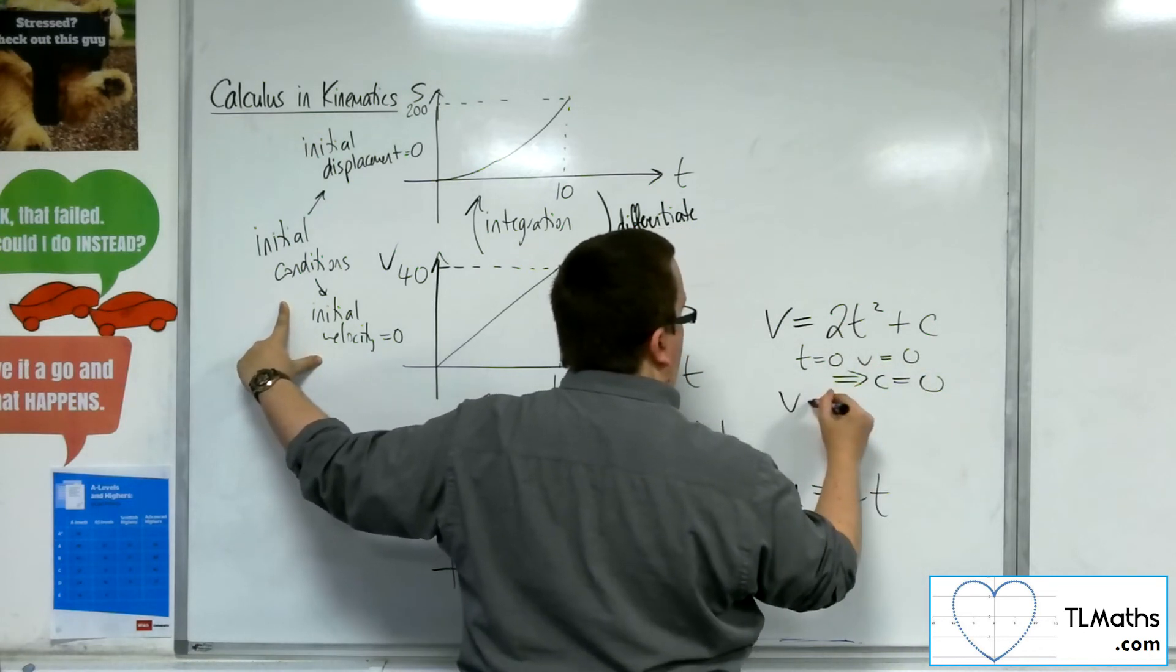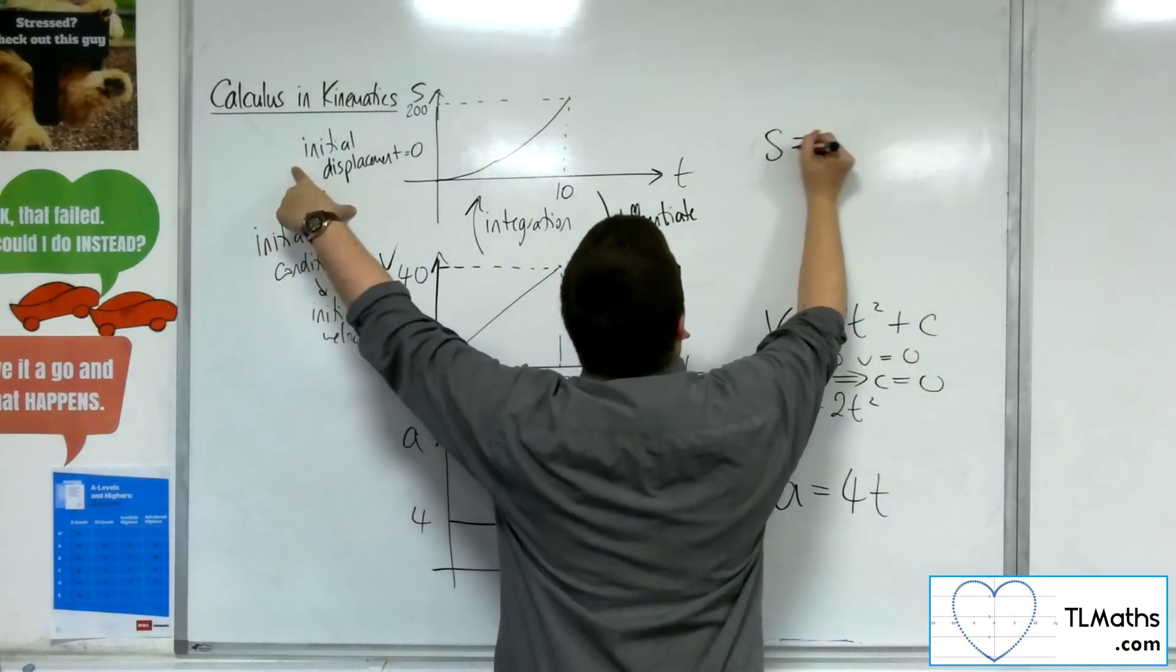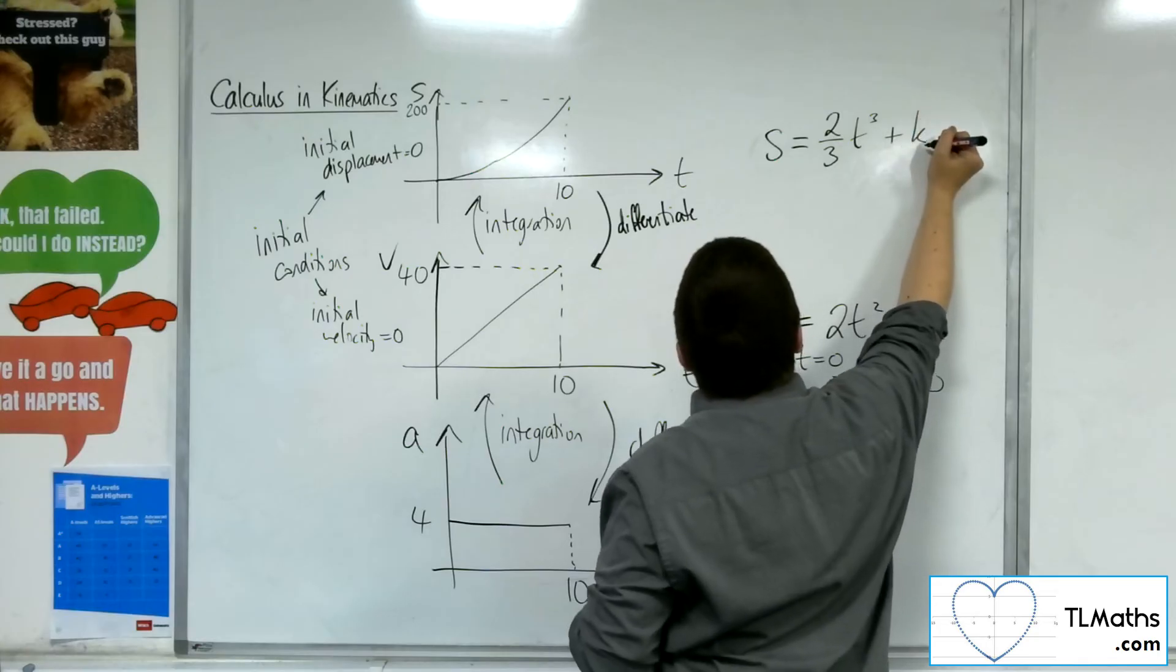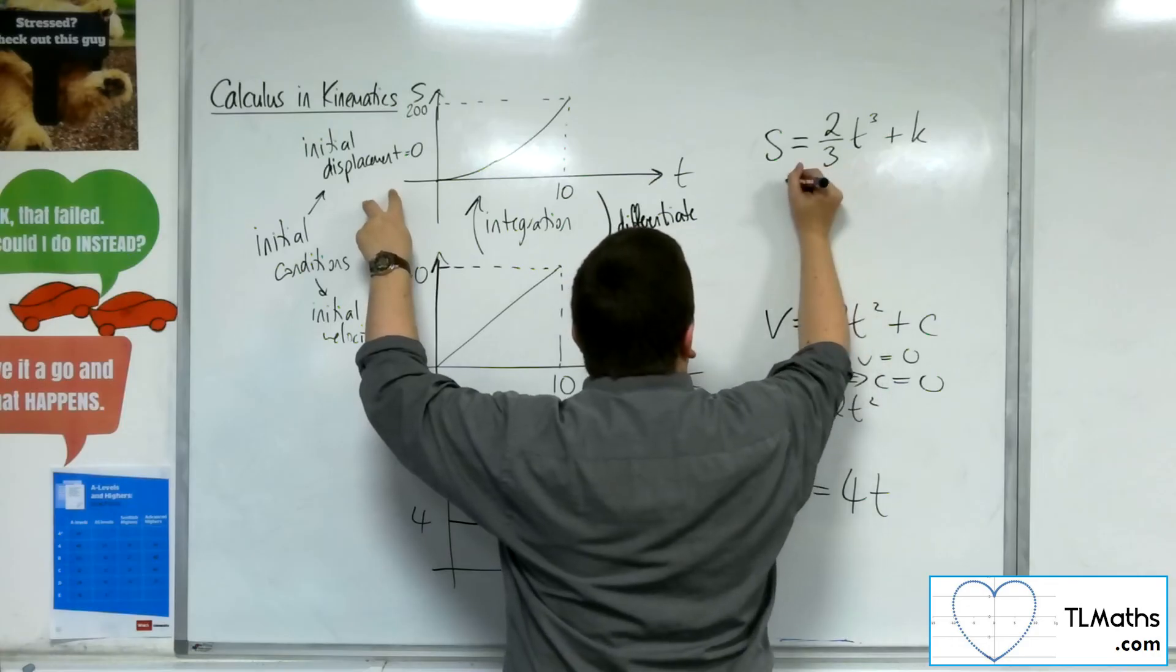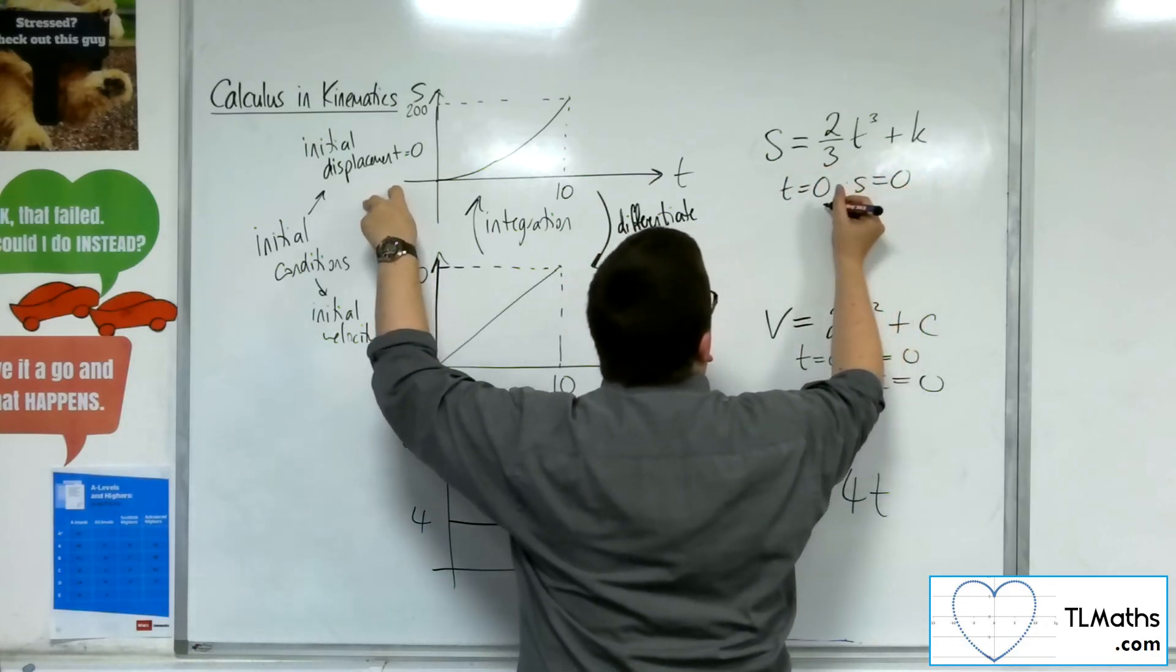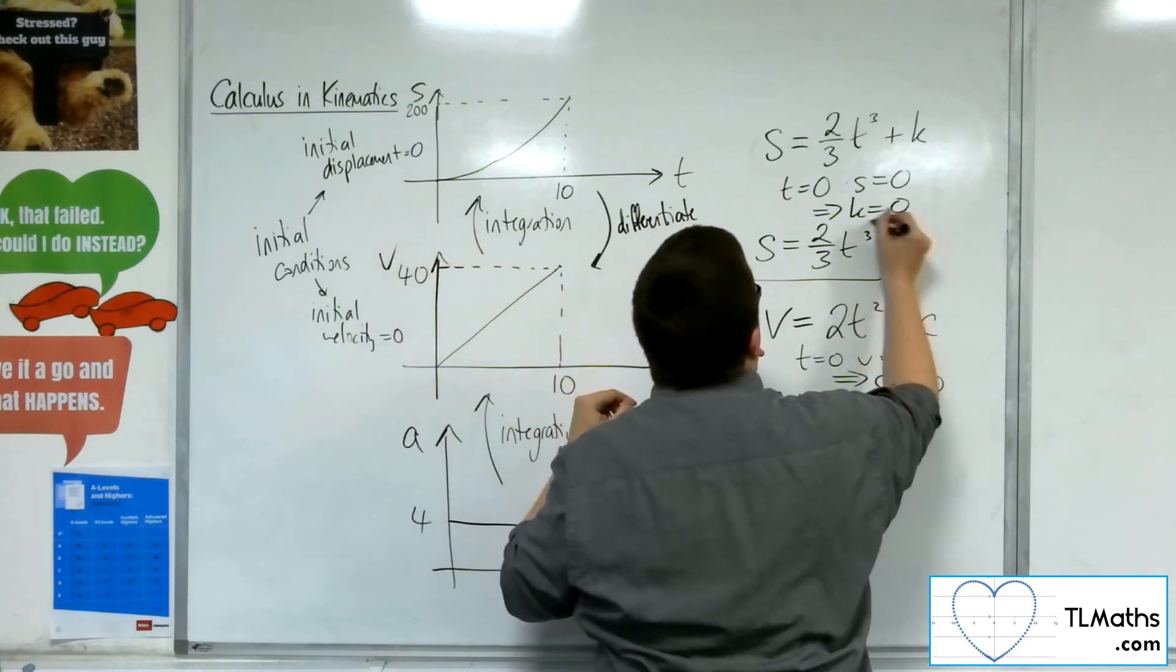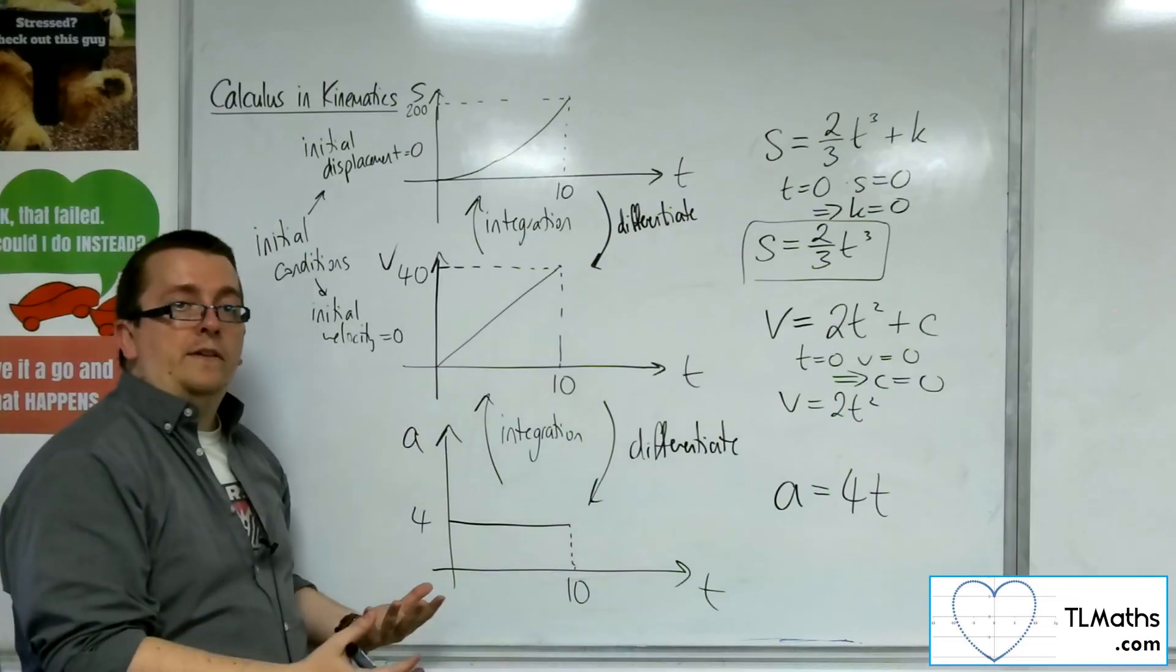So v is equal to just 2t squared. Then I can integrate up to the displacement. So integrating that, I get 2 thirds t cubed plus another constant. I know the initial displacement is 0. So when t is 0, s is 0, and so that means k is 0. And so I can write down an equation for the displacement given the conditions that I've had in the question.